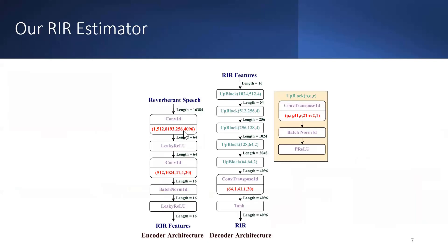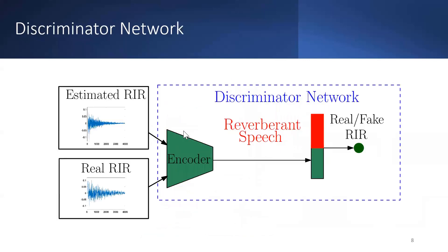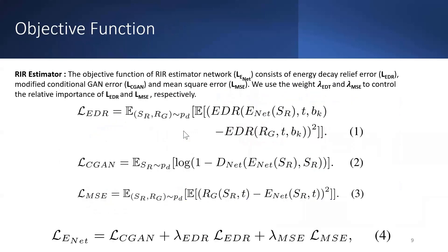We propose an encoder-decoder architecture to estimate the room impulse response from the reverberant speech signal. Our encoder network extracts room impulse response features from the input, and our decoder network reconstructs the room impulse response from those extracted features. Our discriminator network is optimized to discriminate between the estimated room impulse response and the ground truth room impulse response for a given reverberant speech during training. The objective function of the room impulse response estimator consists of energy decay relief loss, modified conditional GAN error, and mean square error.